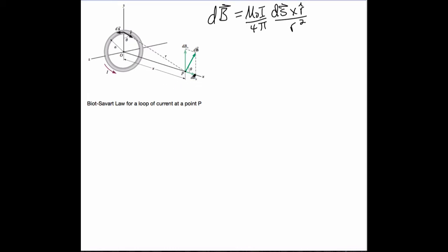The only thing left over is DBX. So all of the individual elements around the ring will have a DBX, but the DB perp will cancel out.